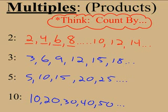Multiples of 2, count by 2. Multiples of 3, count by 3's. Multiples of 5, count by 5. Multiples of 10, count by 10. You can think how easy it could be to list like multiples of 100 or multiples of 50. Just think count by.